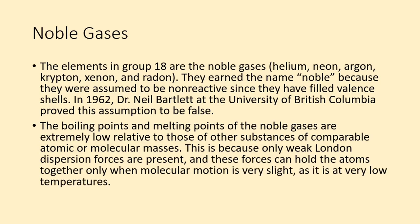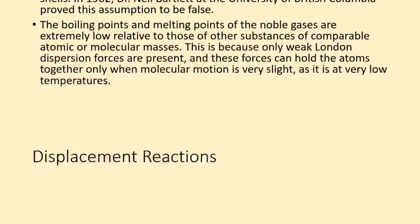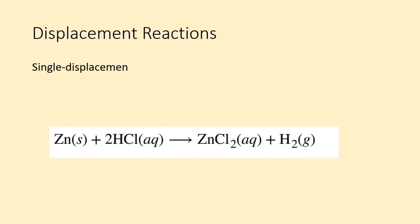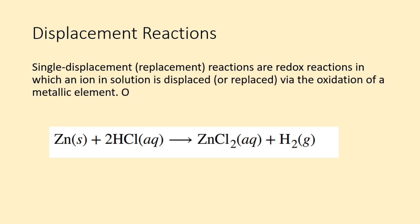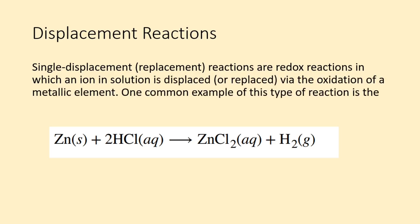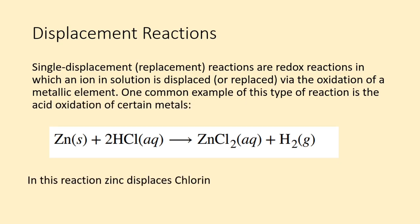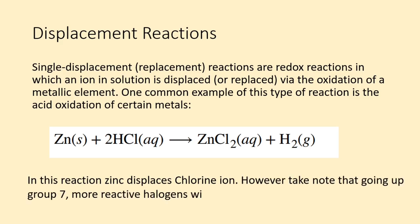Single displacement, or replacement, reactions are redox reactions in which an ion in solution is displaced, or replaced, via the oxidation of a metallic element. One common example of this type of reaction is the acid oxidation of certain metals. In this reaction, zinc displaces the chlorine ion. However, take note that going up Group 7, more reactive halogens will displace less reactive halogens.